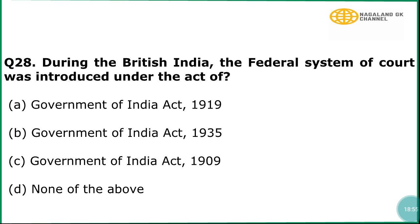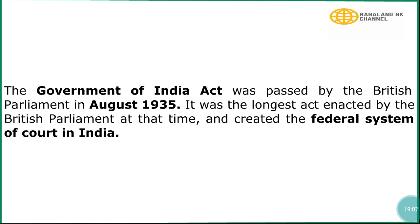Question number 28: During British India, the federal system of court was introduced under the Act of? The correct answer is option number B, Government of India Act 1935. In explanation, the Government of India Act was passed by the British Parliament in August 1935. It was the longest act enacted by the British Parliament at that time, and created the federal system of court in India.